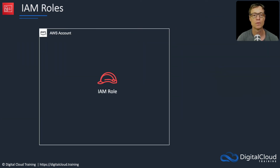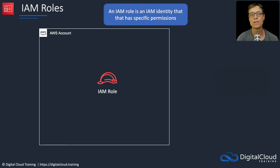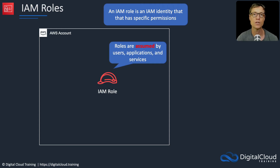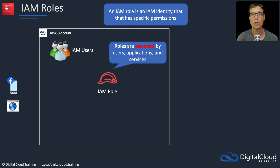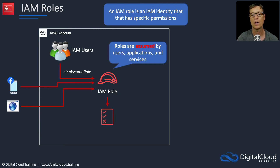IAM roles are an identity that has specific permissions assigned to it, and they are assumed by users, applications, and services. Those entities can assume the role and act as if they are the role. For example, users, a mobile device, or a browser application can each assume a role. For users, you run the API action STS AssumeRole, and once assumed, the identity acts with the permissions applied to that role through a policy.